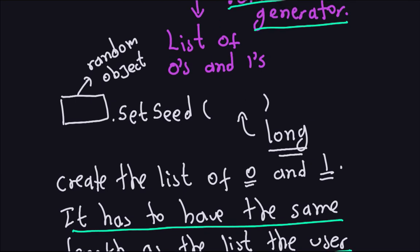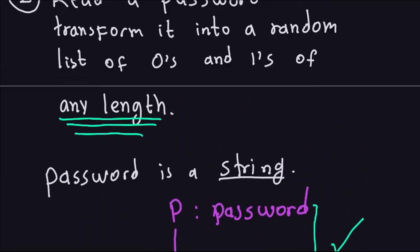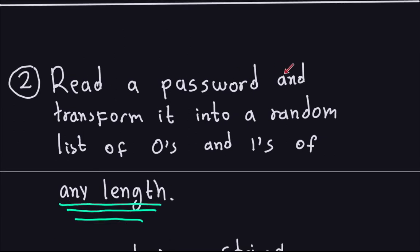That's all you have to do for step number two. To recap: read a password using a Scanner, transform it into an integer using hashCode(), then use that integer as the seed of a Random object to produce a list of zeros and ones with the same length as the user's input. The next thing is step number three, which involves taking the two lists of zeros and ones and XORing them bitwise — and that's what we're going to do in the next video.